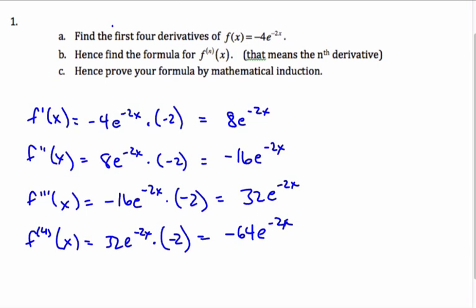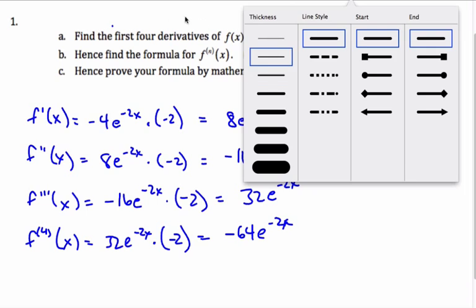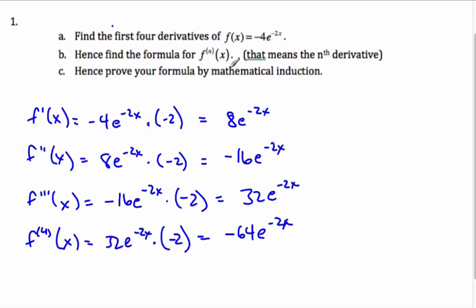Here are my first four derivatives. Then it says to find the formula for f, the nth derivative of x. I'm pretty sure it's going to have e to the negative 2x, since they all do. And the coefficients 8, negative 16, 32, negative 64 are purely a scenario of multiplying by 2 each time.